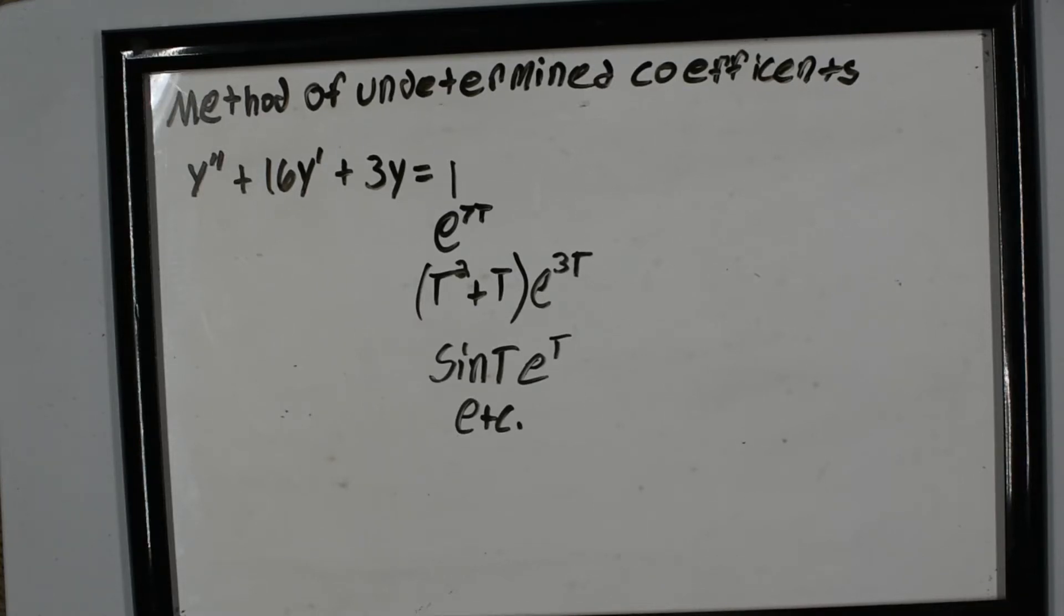In this video we're going to be going over the method of undetermined coefficients and the variation of parameters. For this first part we're going to look over when to use which one.